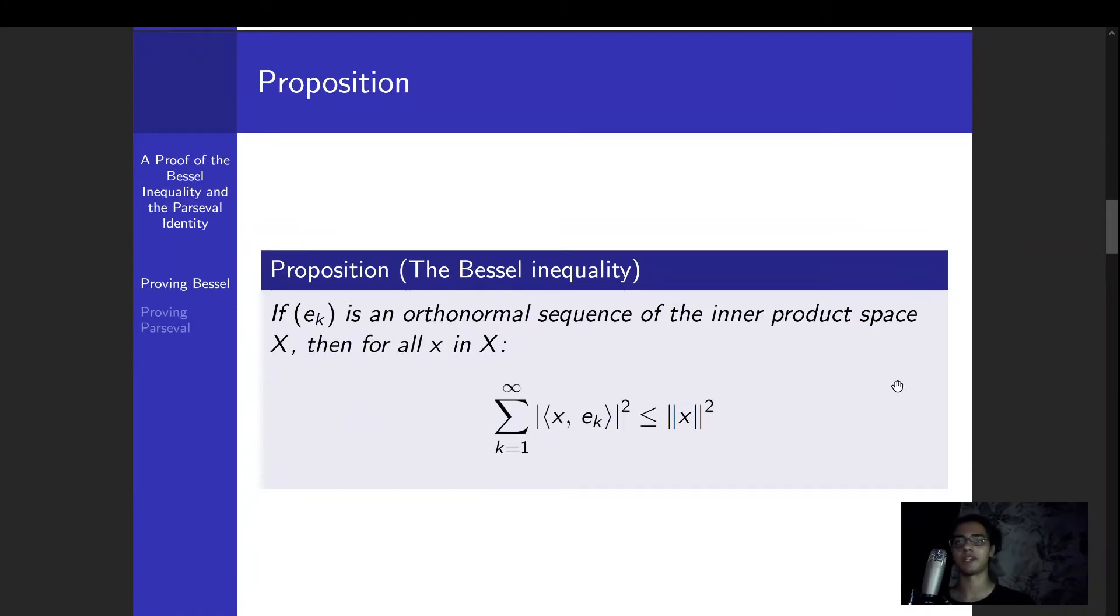Here's the proposition. So we're situated in an inner product space X, and we're given ek, which is an orthonormal sequence of the inner product space. An orthonormal sequence is just a sequence of vectors with norm 1 that are all orthogonal to each other.